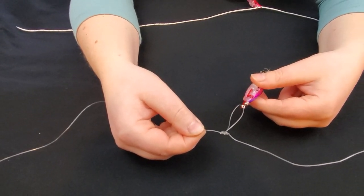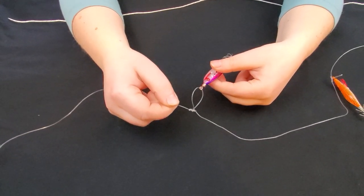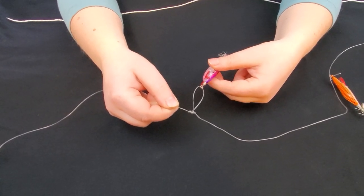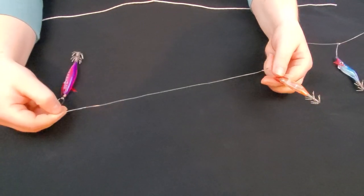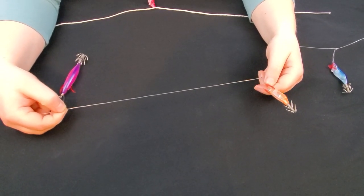The floating jigs are attached to the leader line with a dropper loop, and I'll show you how to tie those here in a second. I have three jigs on my leader line, and they're about 12 inches apart.